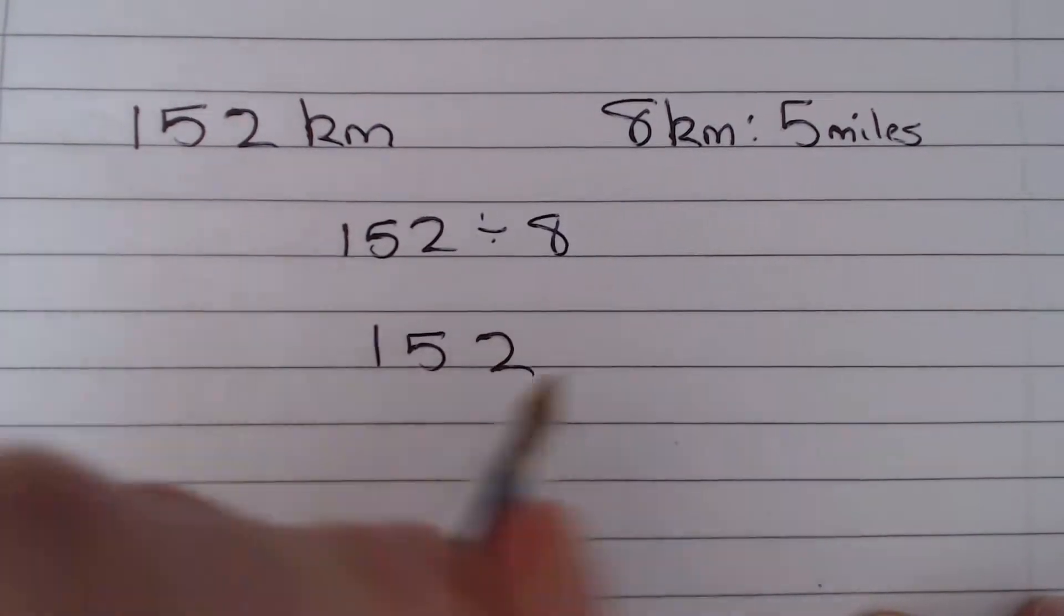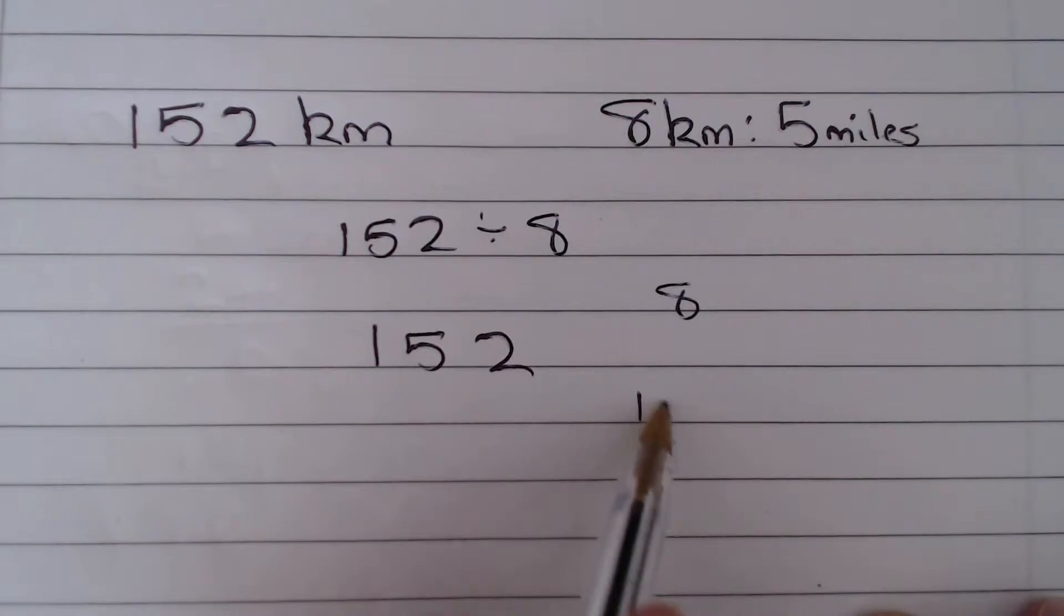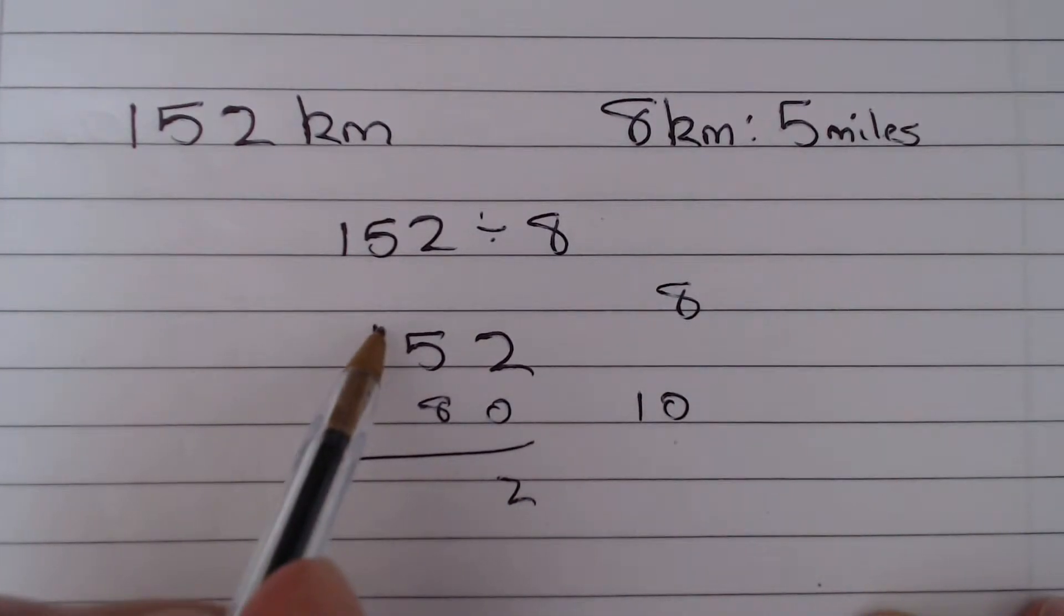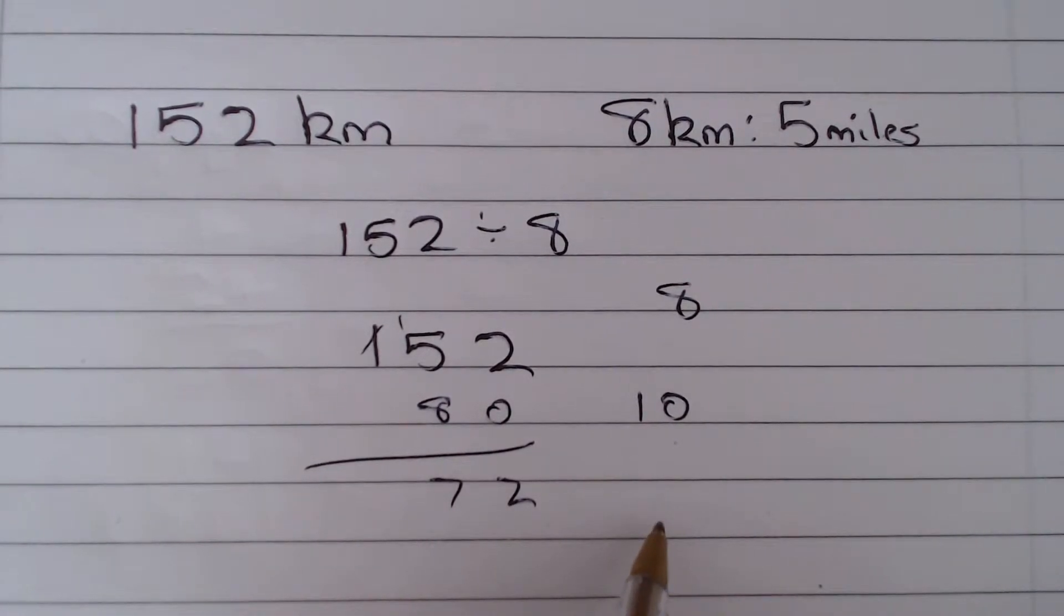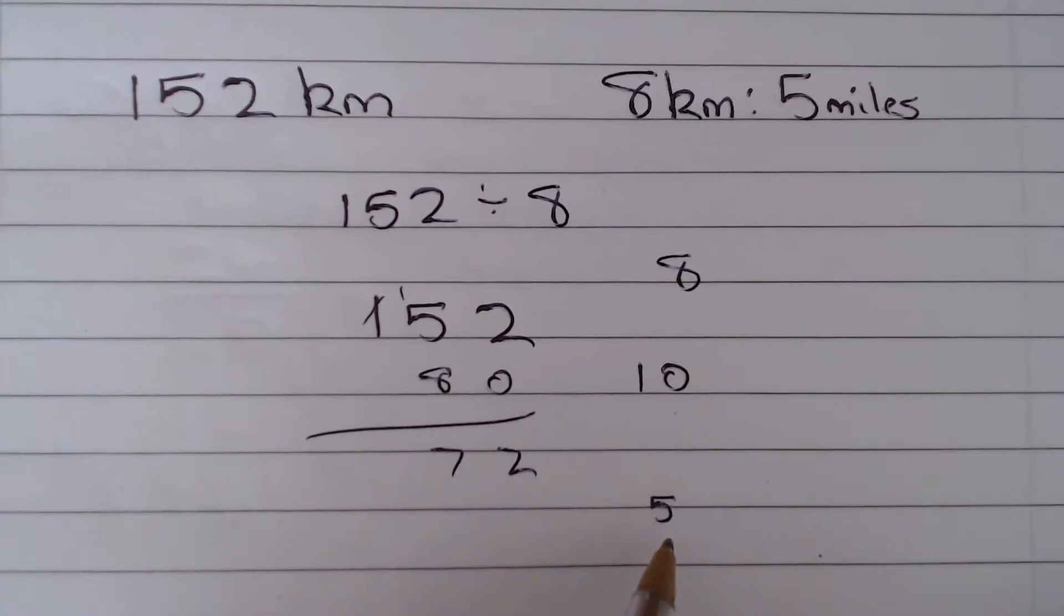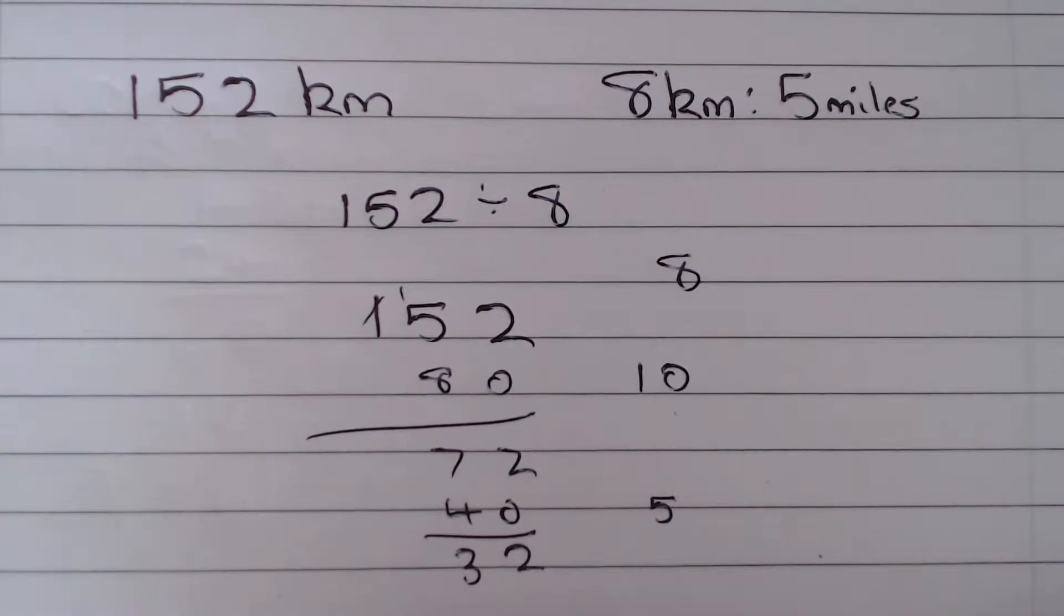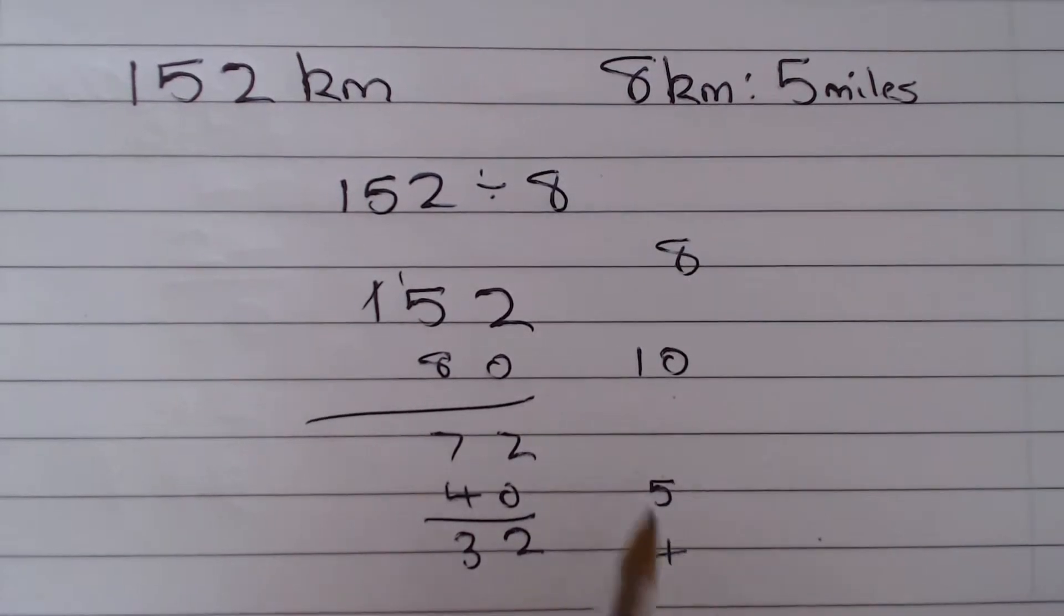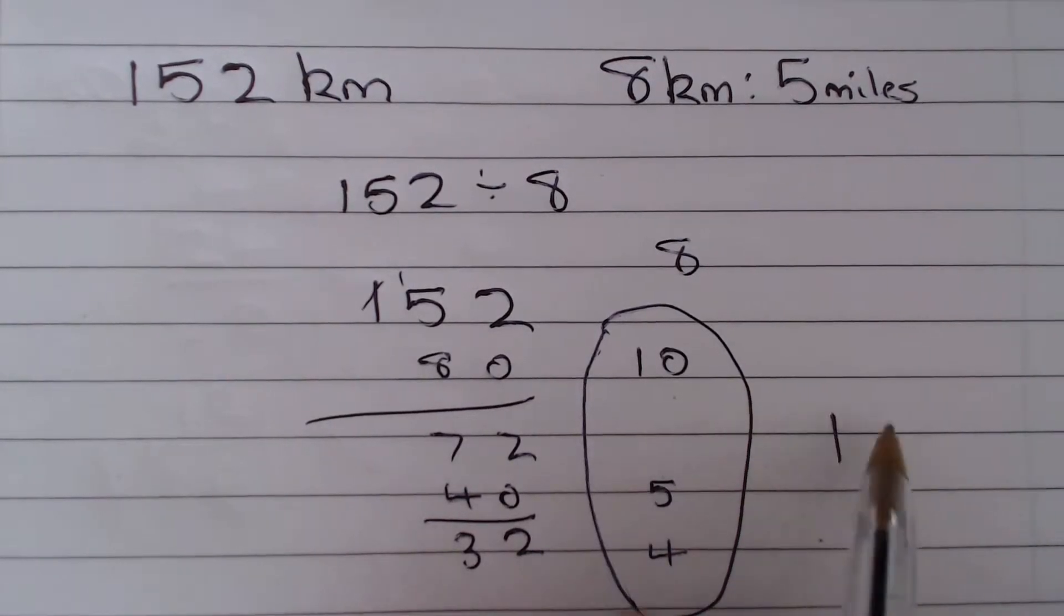So we could say we have 152. What is an easy multiple of 8 we can get out of that? Well we can definitely get 10 eights at 80. And when we take this away from each other, we are going to get 72. Well we can definitely get 5 eights here, which is going to give us 40. So this leaves us with 32. And we should know that 8 fours are 32, so we have 4. So if we add all those up, we get 10 plus 5 plus 4, which is 19.